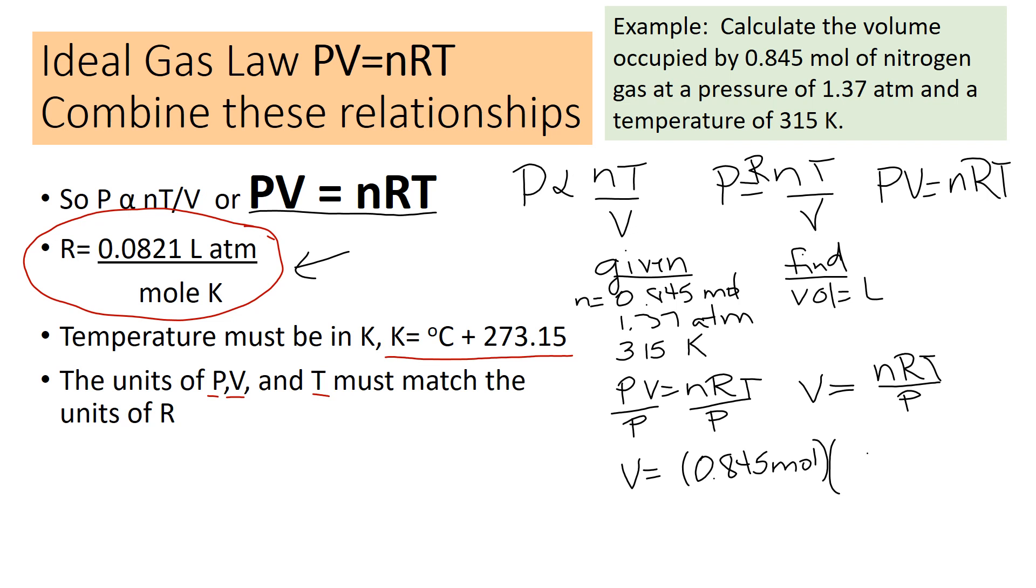So, 0.0821 liter atmospheres per mole Kelvin, and then T is 315 Kelvin, and I'm going to divide it by P, 1.37 atmospheres. I included all the units. You may want to just drop them, that might be easier. The reason I included them is to show you how the units cancel with R. So that moles cancel, this Kelvin cancels, the atmosphere cancels, and we're left with units of liters, which is the unit for volume.